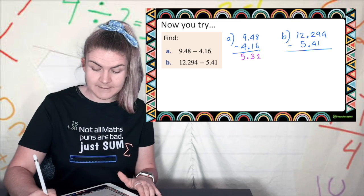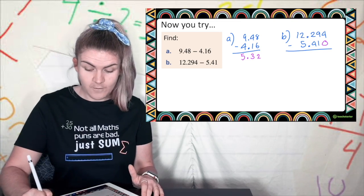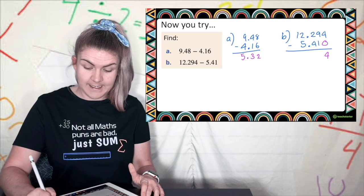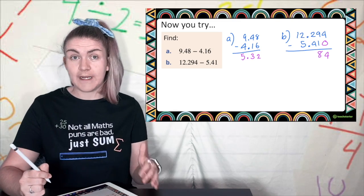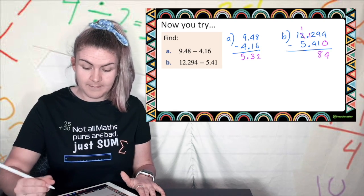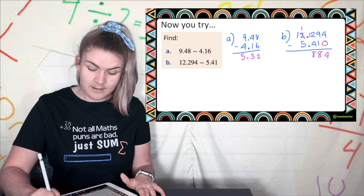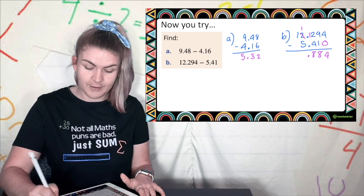For b I've got a missing spot here so I'm going to fill in the 0. 4 take away 0 is 4. 9 take away 1 is 8. 2 take away 4 we can't do because 4 is bigger than 2 so we're going to borrow. That becomes a 1. That becomes a 12. 12 take away 4 is 8 and I've hit the decimal point so I'm putting that in.